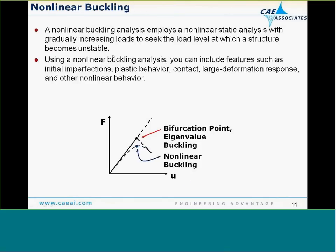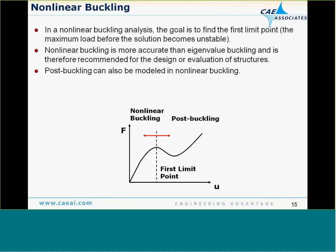Now let's talk about nonlinear buckling. When you do a nonlinear buckling analysis, we're trying to account for the fact that we don't have perfect structures. Imperfections in real models cause structures to buckle under compressive loads earlier than the theoretical limit predicted by linear eigenvalue buckling. From the force-deflection curve, you can include imperfections, contact, material nonlinearities like plasticity, and you definitely want to turn on large deformation analysis because you're expecting the structure to buckle.